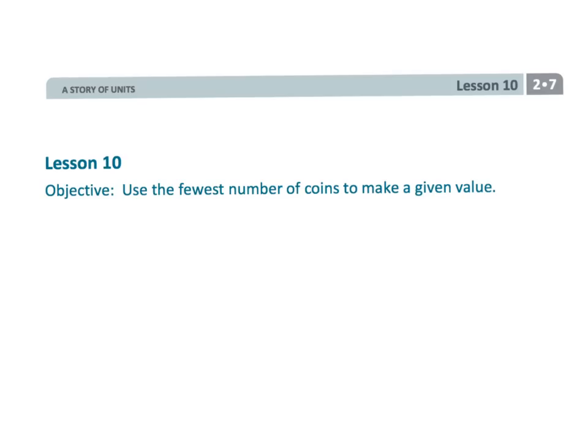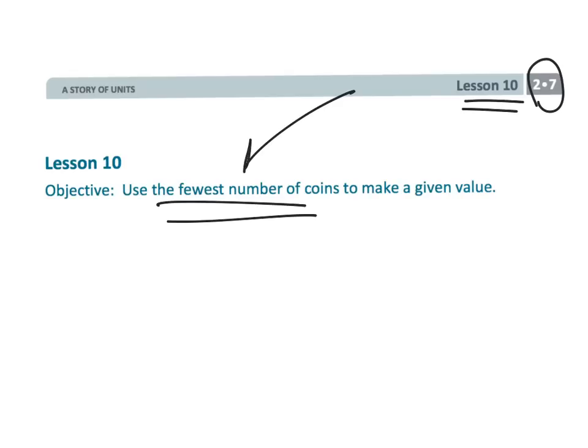That wraps up second grade module 7 lesson 10 — using the fewest number of coins to make a particular value. Now we're talking about optimization!